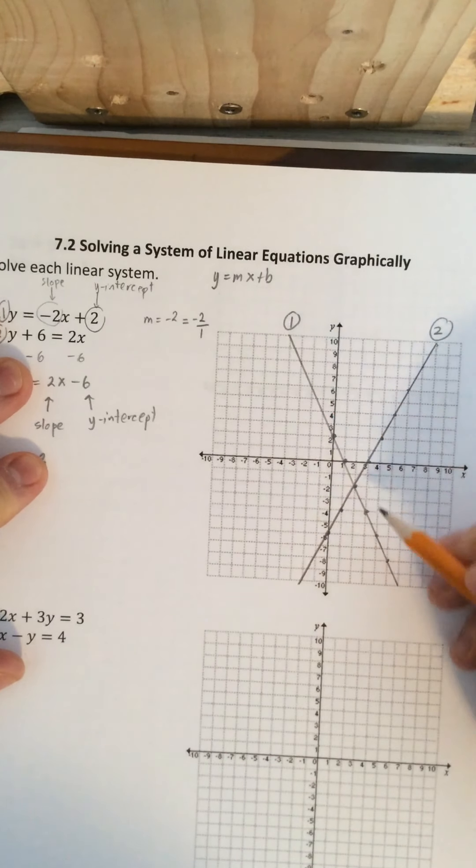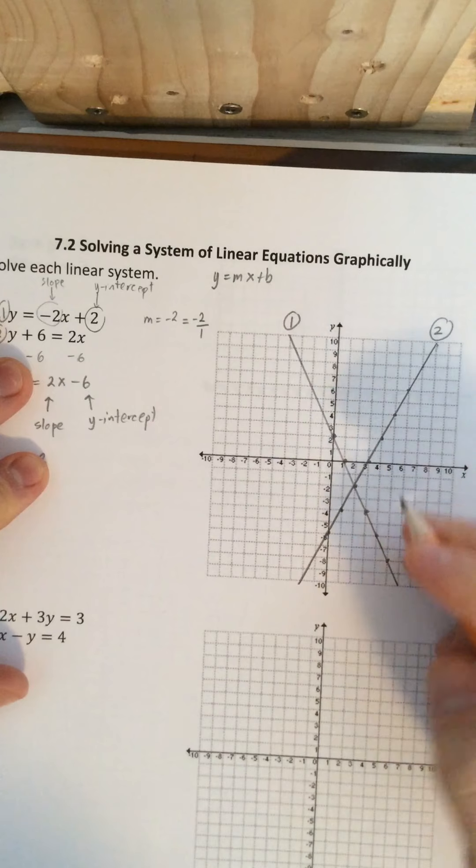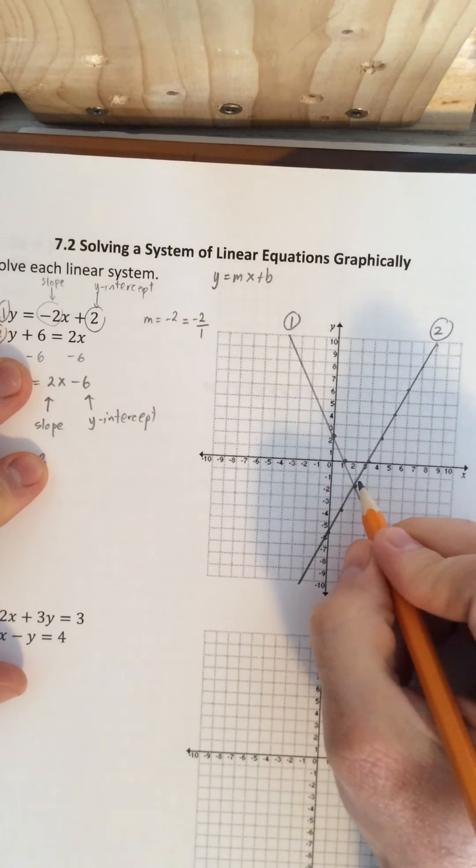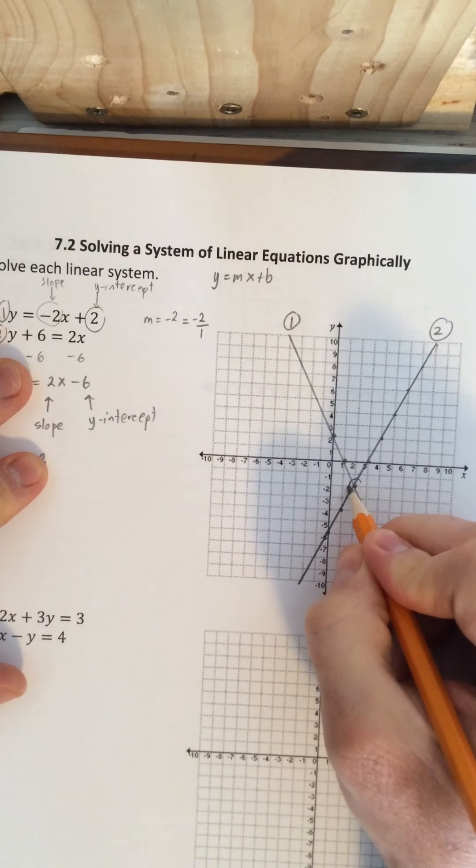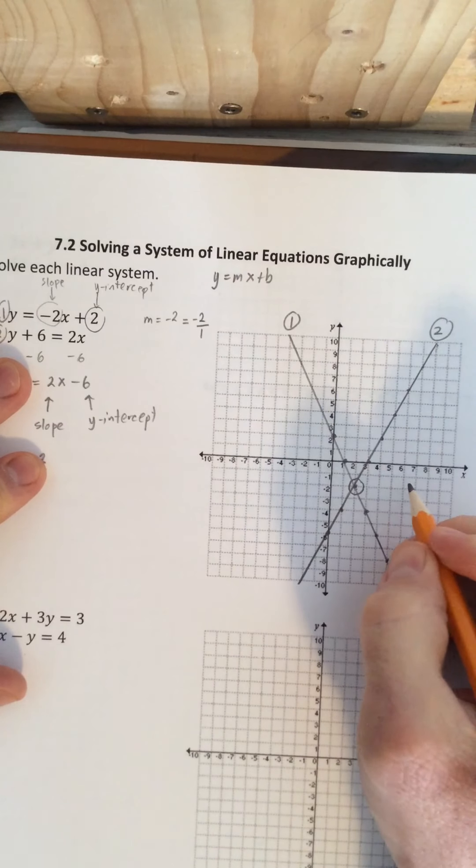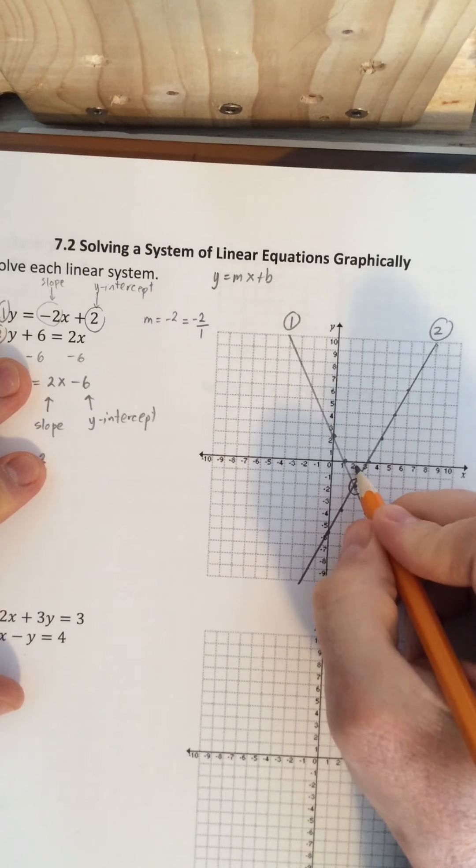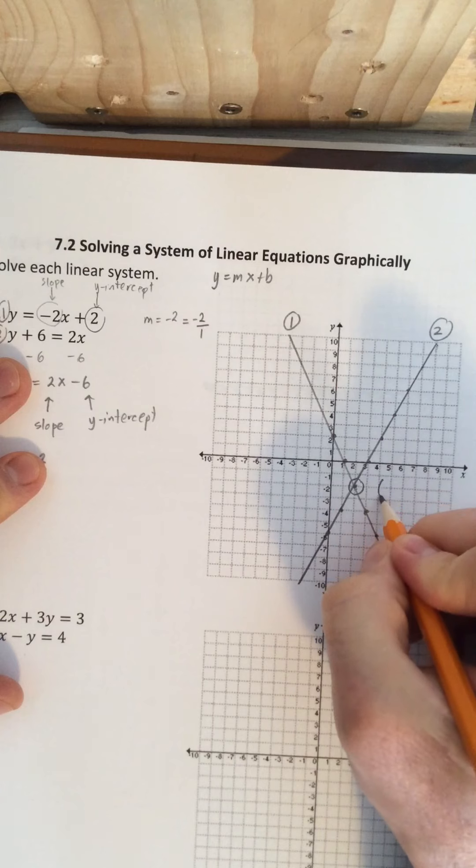Now if you look, here's our system of equations graphed. The solution to this, if you look where they intersect, is this point here. This is the intersection point. And so the solution for this graph is this coordinate.